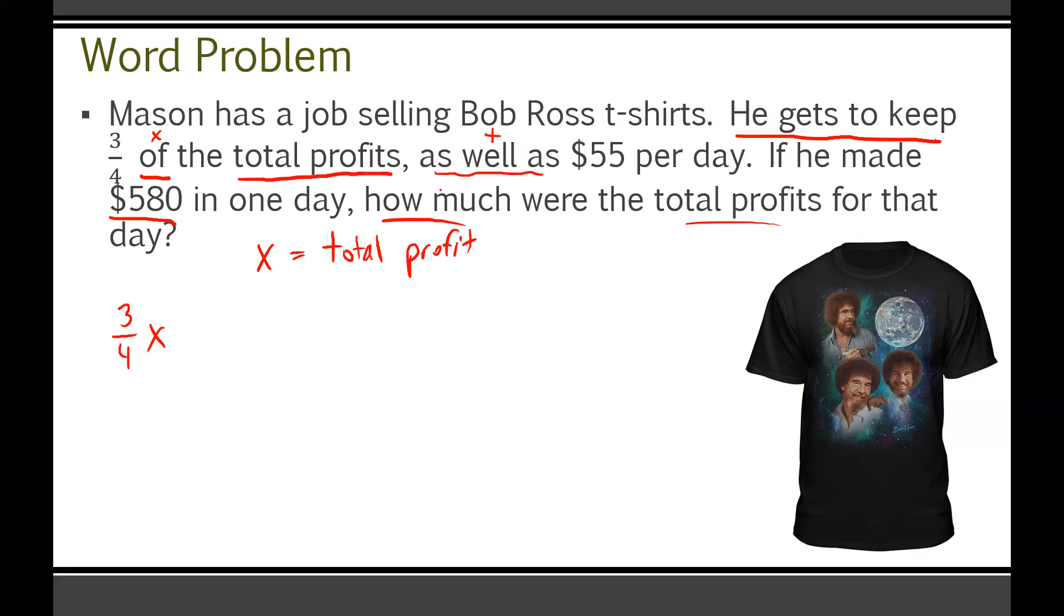Three quarters of the total profit is three quarters times X, three quarters X, as well as $55 per day. So plus $55 in a day equals how much he gets to keep, which in that particular day, it was 580 bucks. That right there, we just formed a linear equation. Boom. Just like that out of thin air, we made ourselves a linear equation. Boom. Now we can solve this. It's our own thing ready to go.